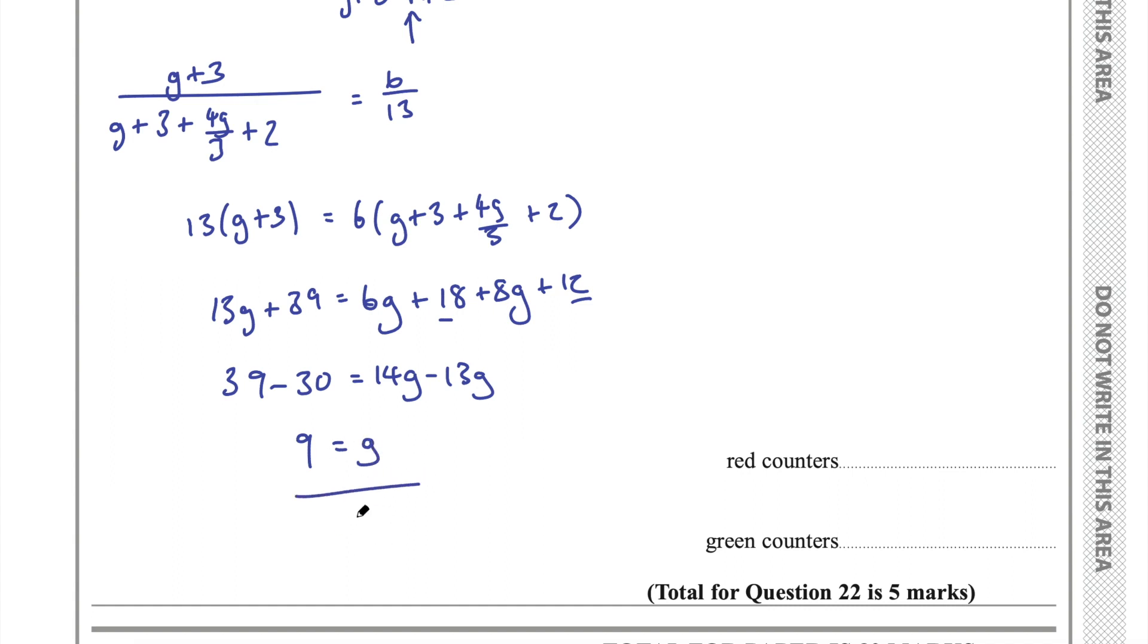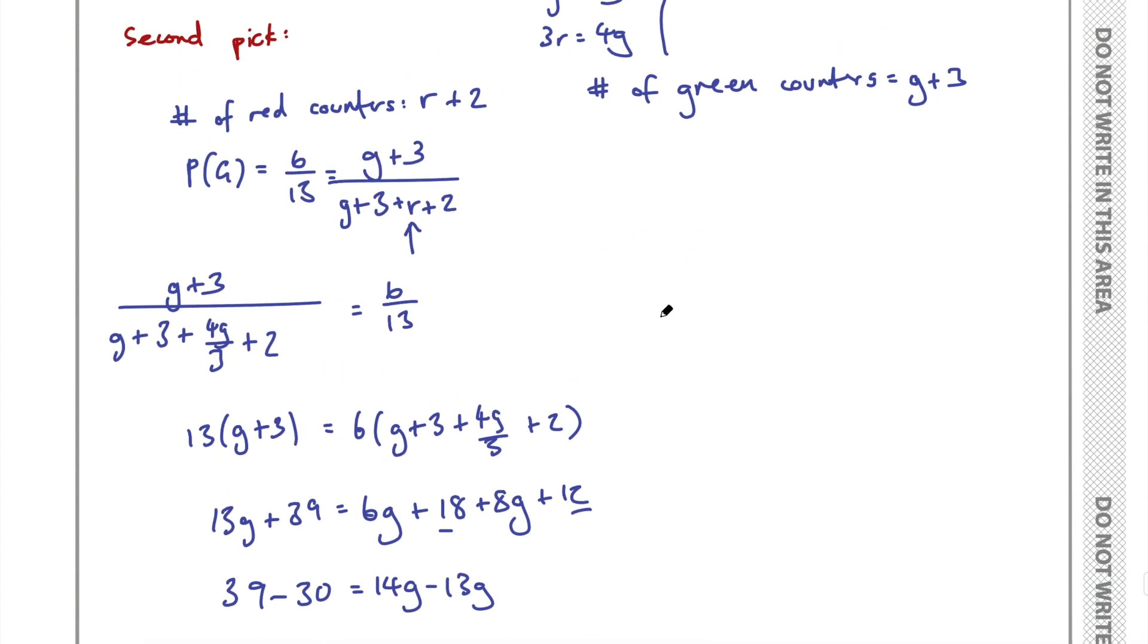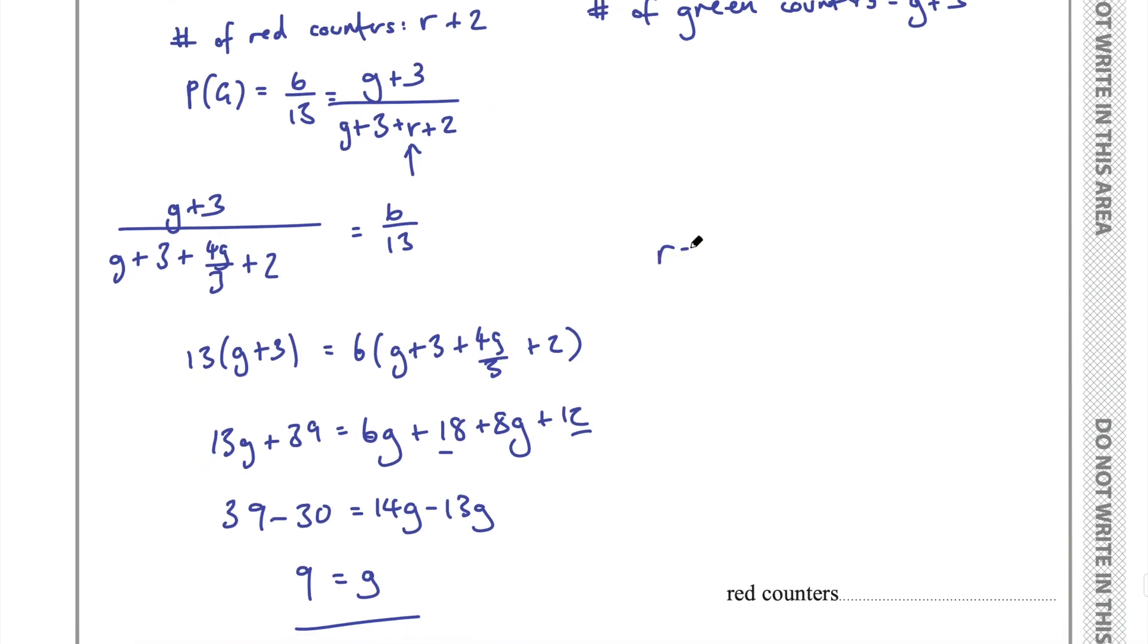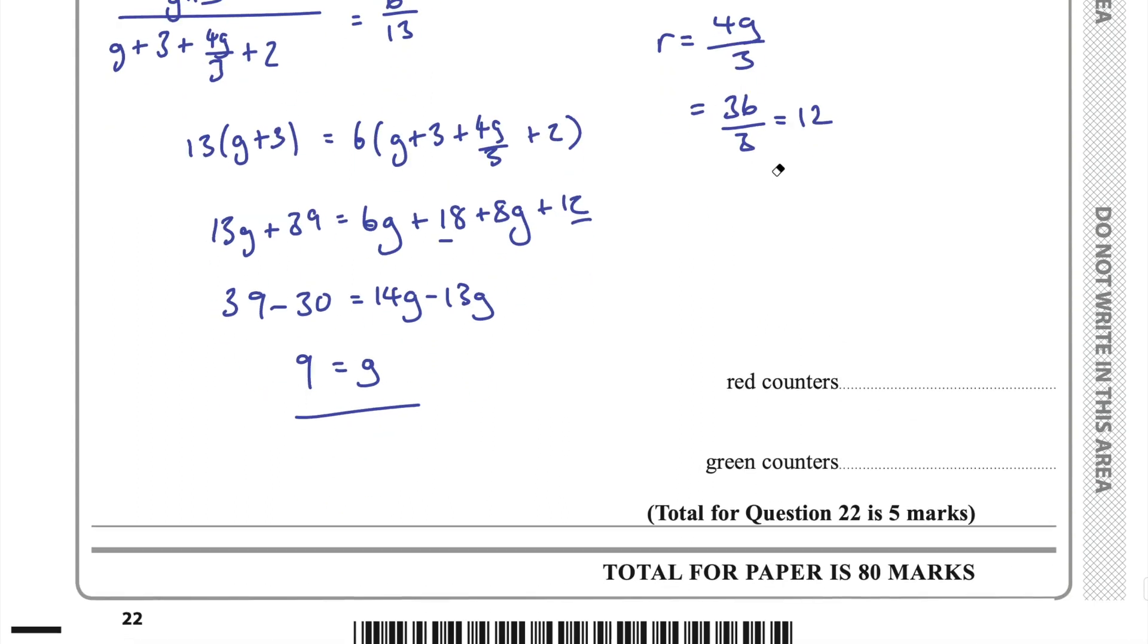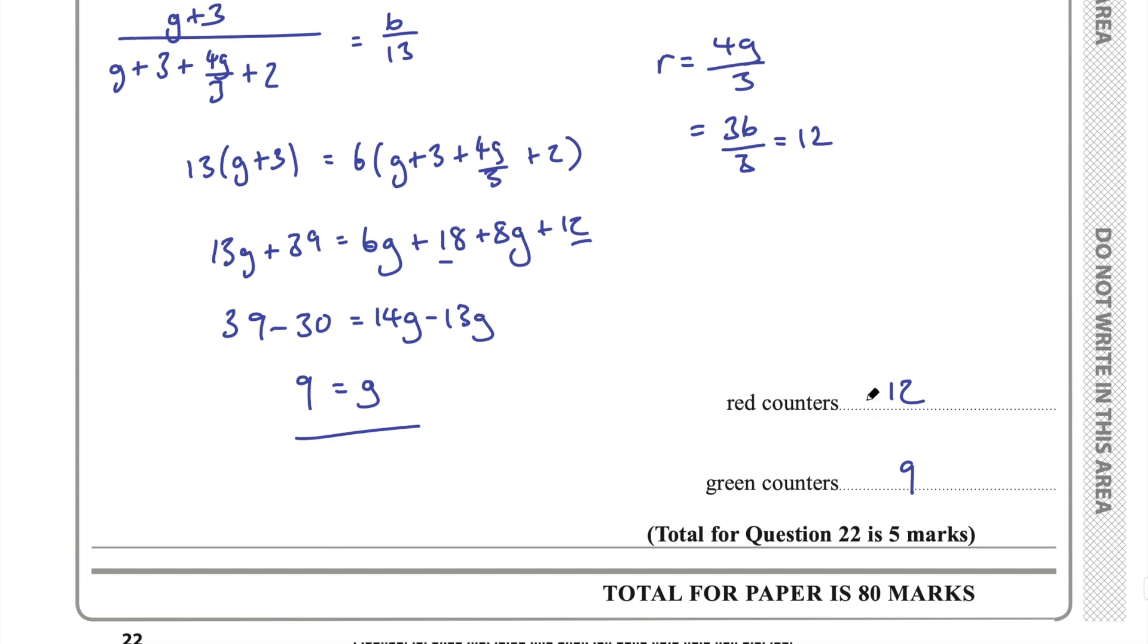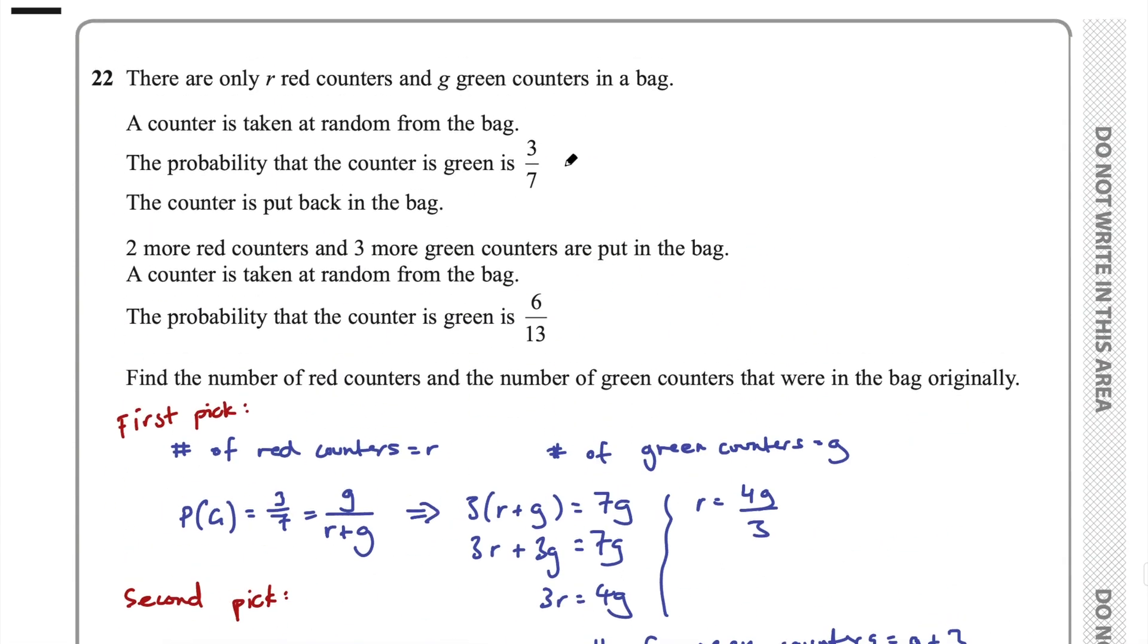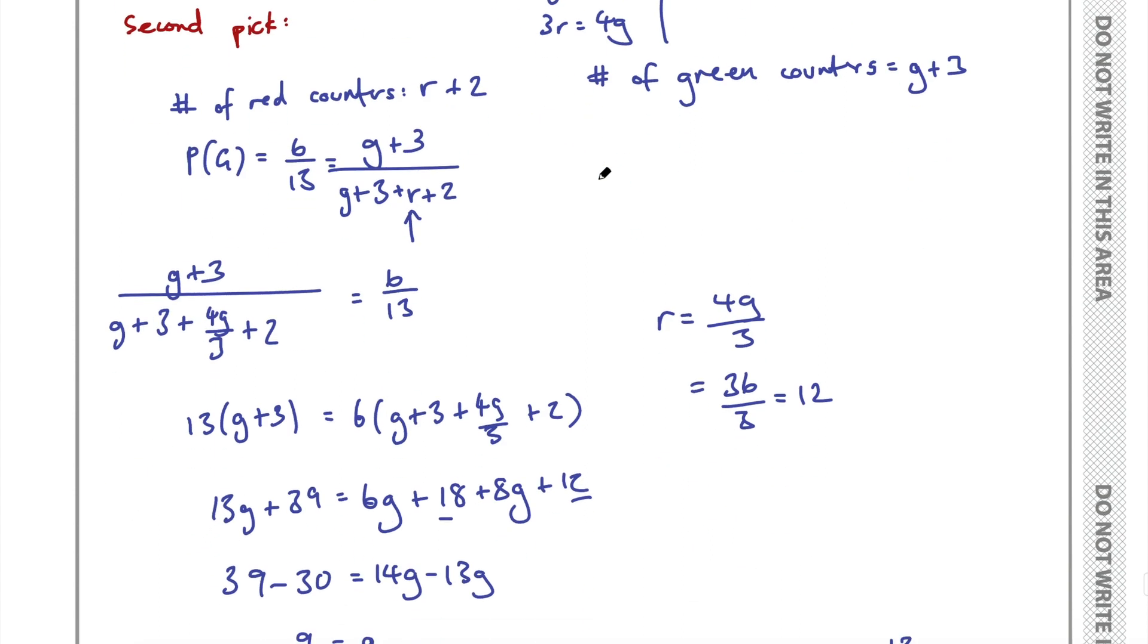And then we need to find the number of red counters. We could do that using this equation here. So we know that R equals 4G on 3. So if we substitute 9 into this, this would be 36 on 3, which is 12. So the number of red counters is 12. So green is 9, red is 12. And then I'd go back to part of this problem and maybe just check that that fits as well.